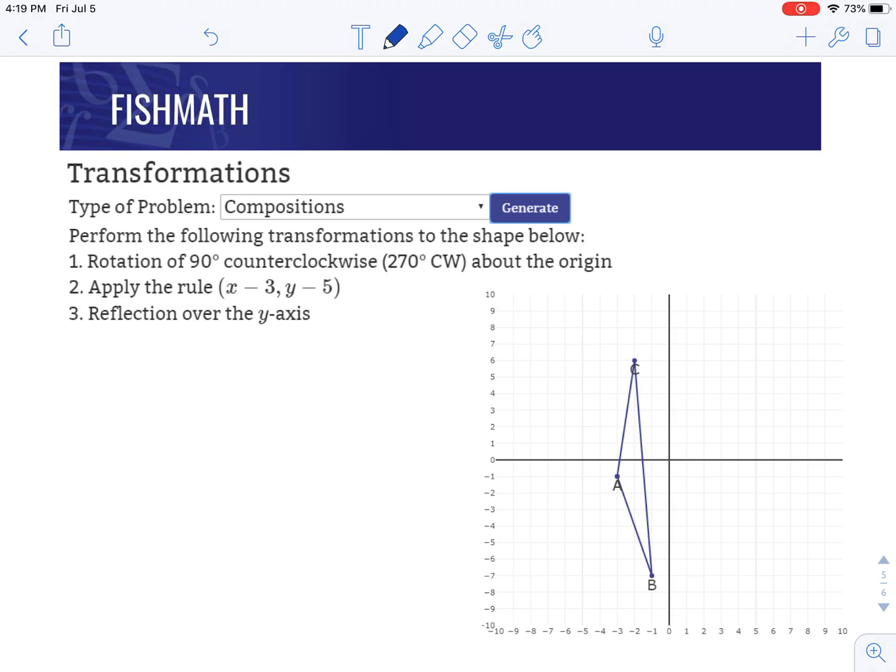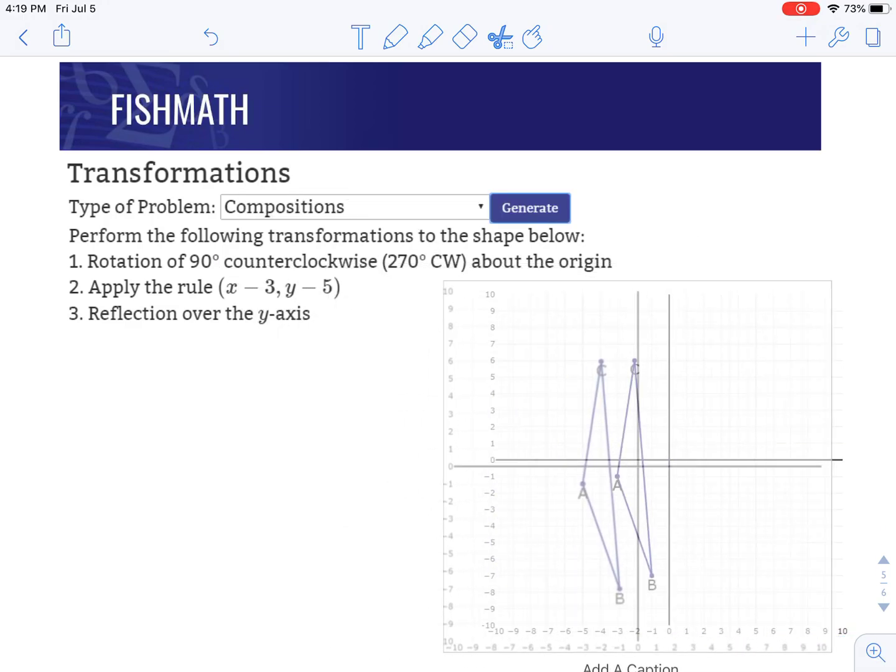We've got to follow the steps here in order. So we're going to first rotate, then translate, and then reflect. We're going to rotate this shape first 90 degrees counterclockwise about the origin. I'm going to take a copy of this picture so that I can turn it, and we can look at the new version after we do our rotation.